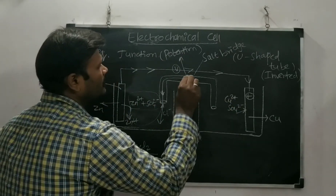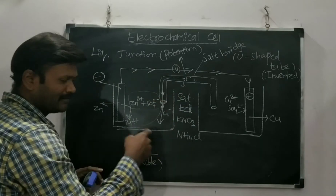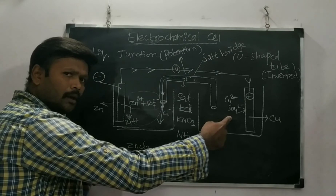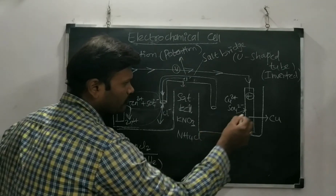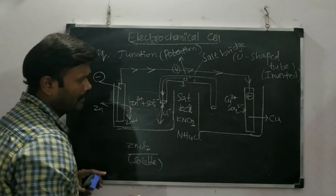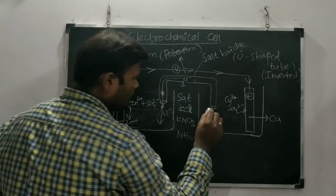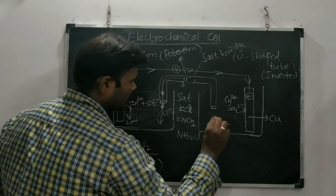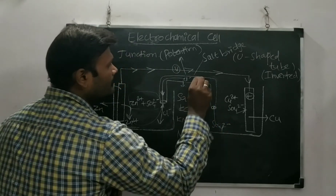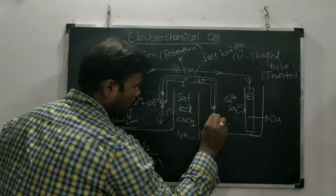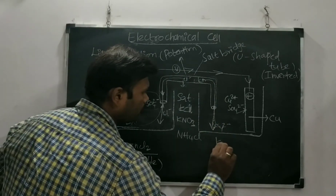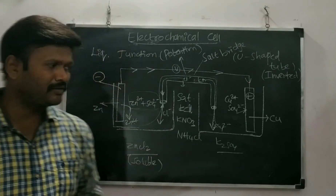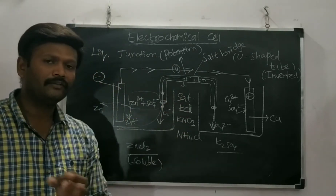So Cl⁻ flows to the anodic solution and K⁺ flows to the cathodic solution, maintaining electrical neutrality in both solutions. This is the use of the salt bridge. Are you able to understand why we use the salt bridge? It eliminates the liquid junction potential and maintains neutrality.